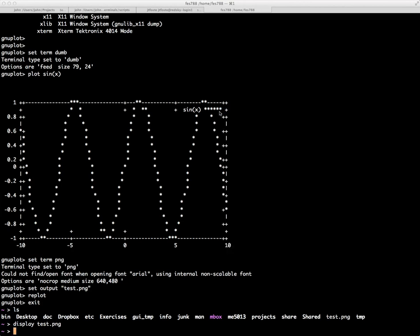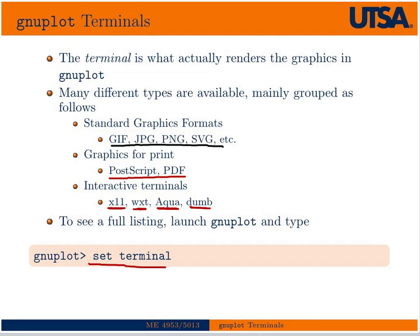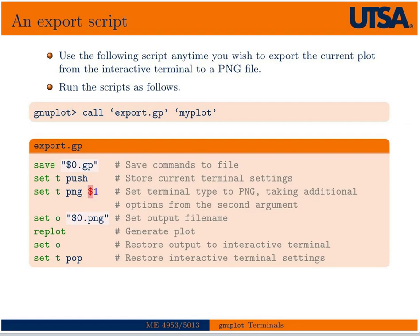You can set up a NuPlot script — I called it export.gp — such that you can work with the terminal interactively in the X11 window to get the plot exactly like you want it, and then call this script from the interactive NuPlot command line. It'll create the output file — in this case PNG, but you could set it to something else — and then return you to an interactive terminal.